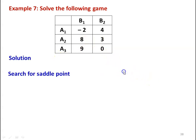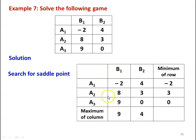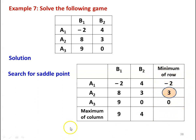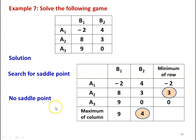We search for the saddle point. Minimum of each row: A1 = −2, A2 = 3, A3 = 0. Maximum of each column: B1 max = 9, B2 max = 4. The maximin (maximum of row minima) = 3; the minimax (minimum of column maxima) = 4. Since 3 ≠ 4, there is no saddle point in the problem.